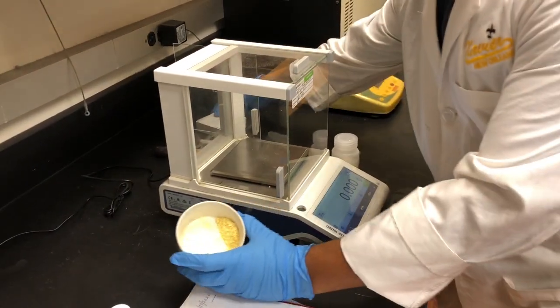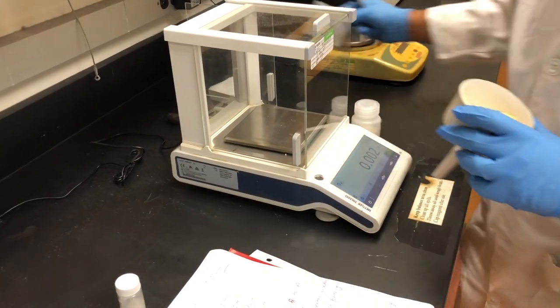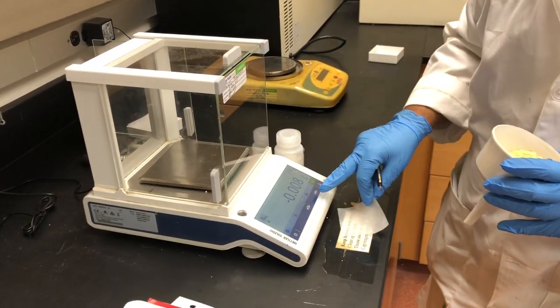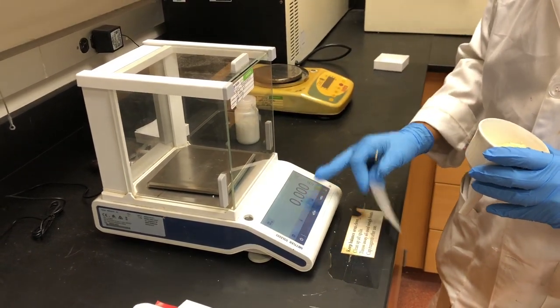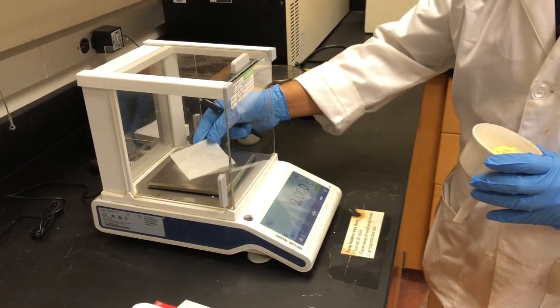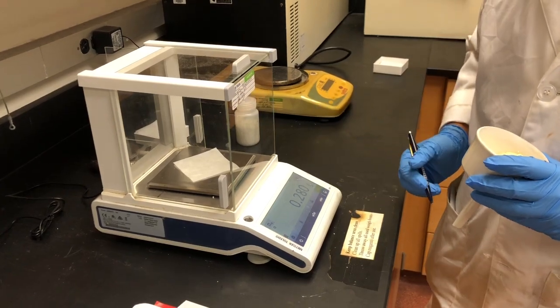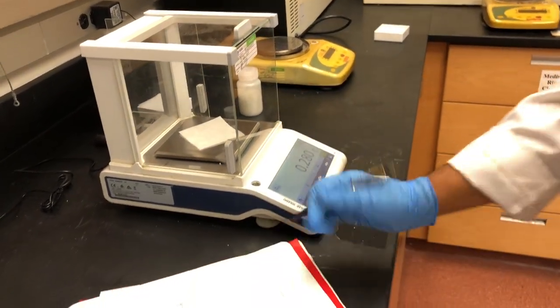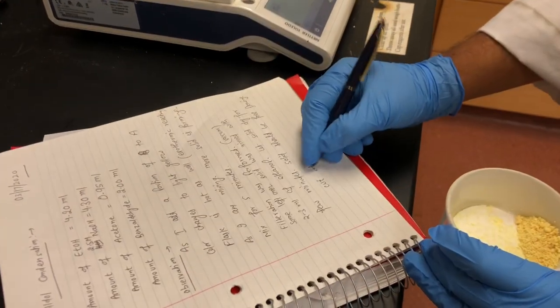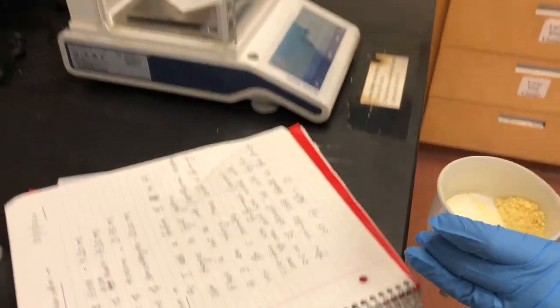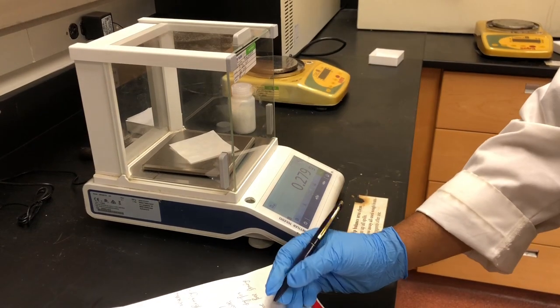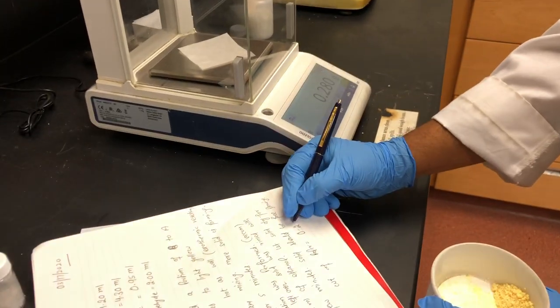So, what I am going to do is, first, I tare the machine to make sure it is zero. Then I am going to put a weighing paper and going to write down the weight of paper in my notebook. Make sure you close the weighing machine.